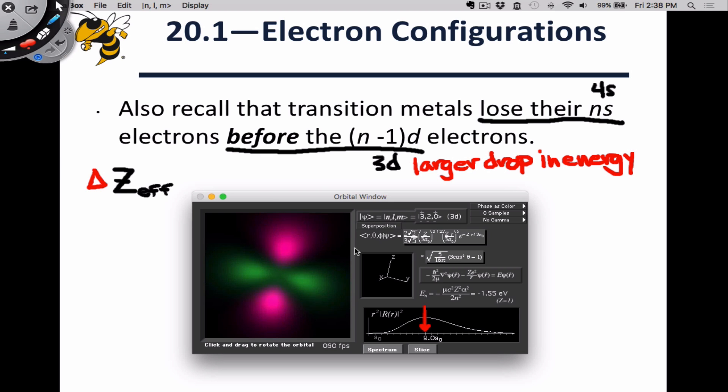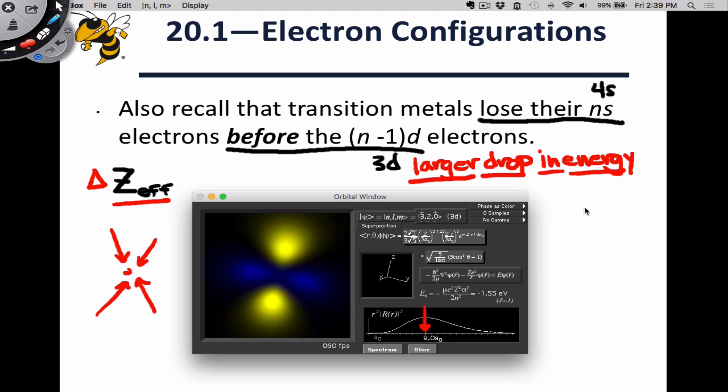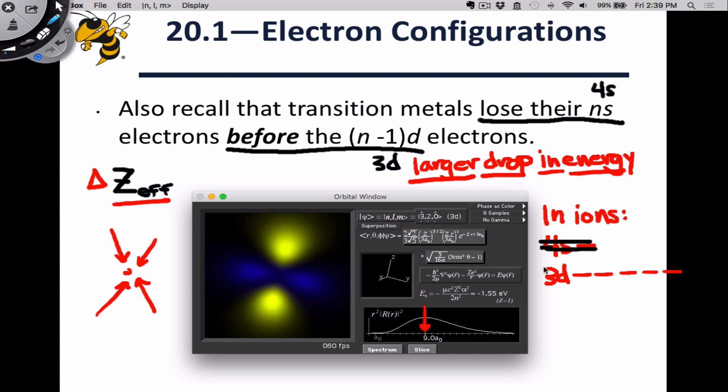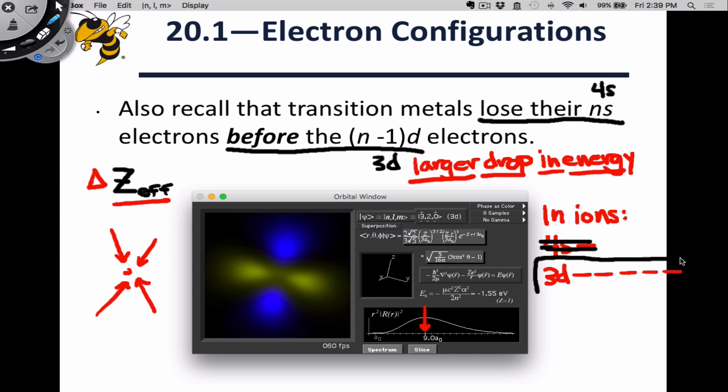The fact that the 3d orbitals are much more compact and closer to the nucleus than the 4s orbitals means that they're affected more strongly by the change in z effective when an electron is lost from the atom. So losing an electron from the atom increases the effective nuclear charge because shielding goes down. The electrons affected most strongly by that are those closest to the nucleus. They're pulled in much more tightly to the nucleus as a result of the loss of that negative electron. Since the 3d electrons are closer on average to the nucleus than the 4s electrons, they experience a larger drop in energy. This means that in ions of the transition metal atoms, the 4s subshell ends up higher in energy than the 3d subshell.